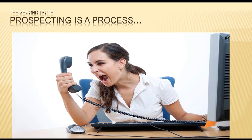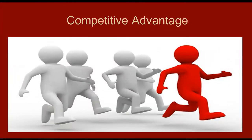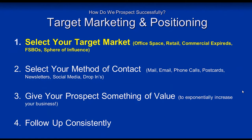The second truth about prospecting is that it's a process, not an event. Some trainers teach realtors to randomly pick up the phone and call people until they get an appointment — and that does work — but a much smarter approach is to carefully select a target market where you might find a competitive advantage and lay out a game plan. The four steps to a successful prospecting system are: one, select the target market; two, select a method of contact; three, give your prospect something of value; and four, follow up consistently.